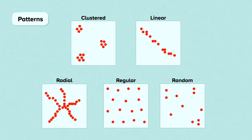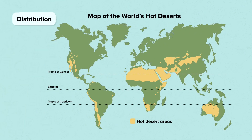The term distribution is used more broadly to describe where things are. For example, as the map shows, deserts are distributed on the continents of North and South America, Africa, Asia and Oceania. They are found around 30 degrees north and south of the equator and towards the centre of continents. There may or may not also be a pattern you can comment on. In this case, hot deserts are in a linear pattern linked to latitude.